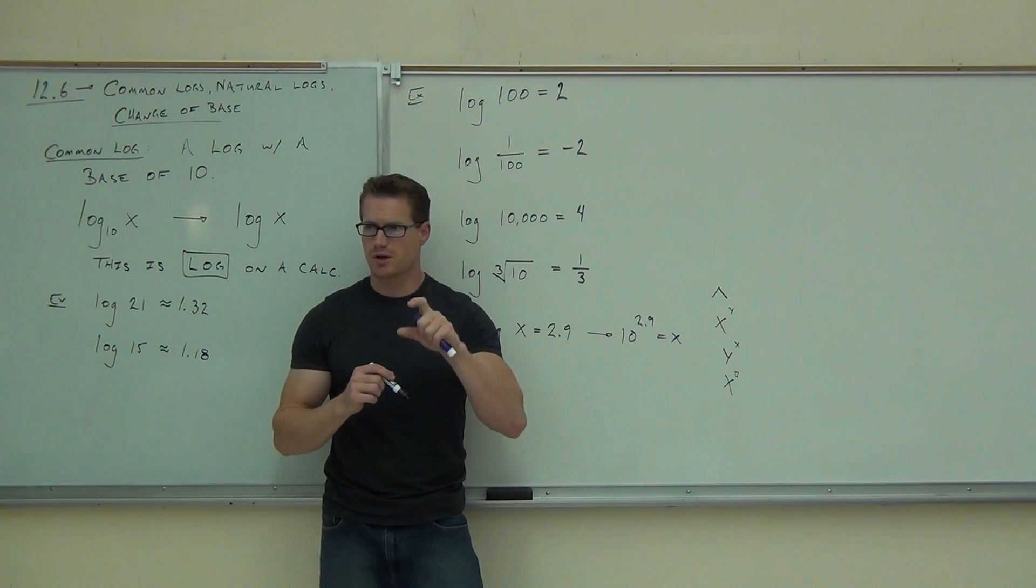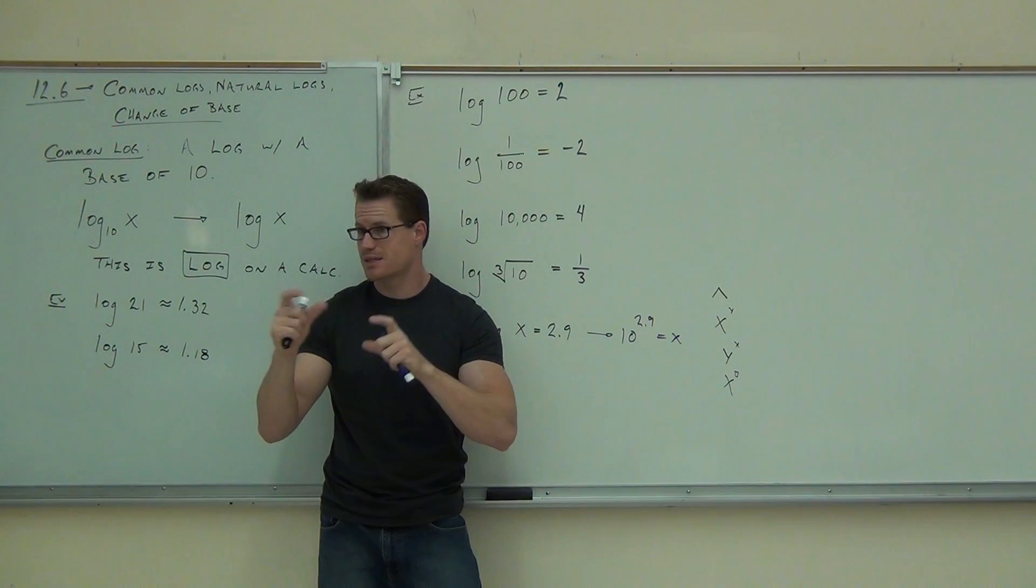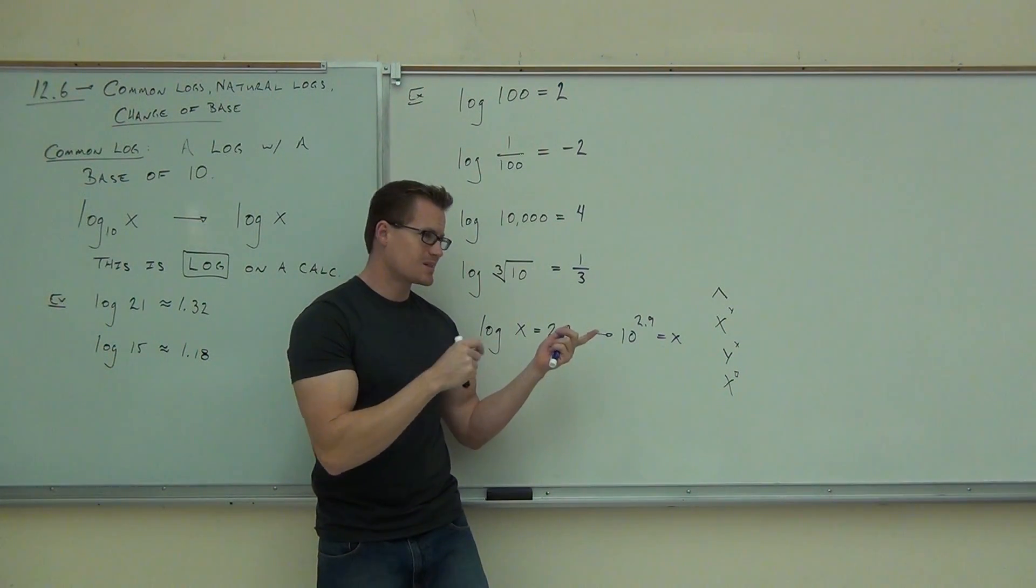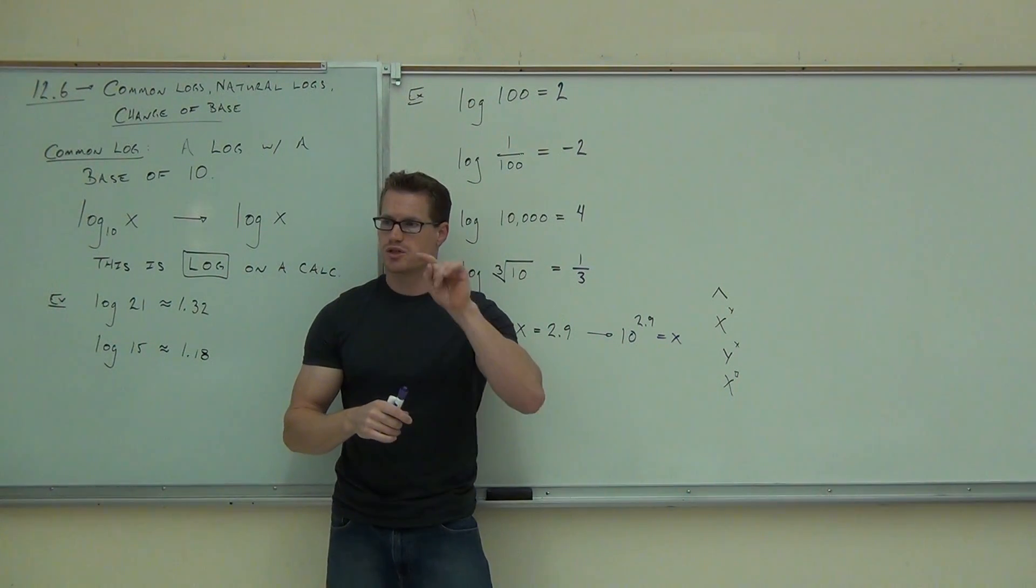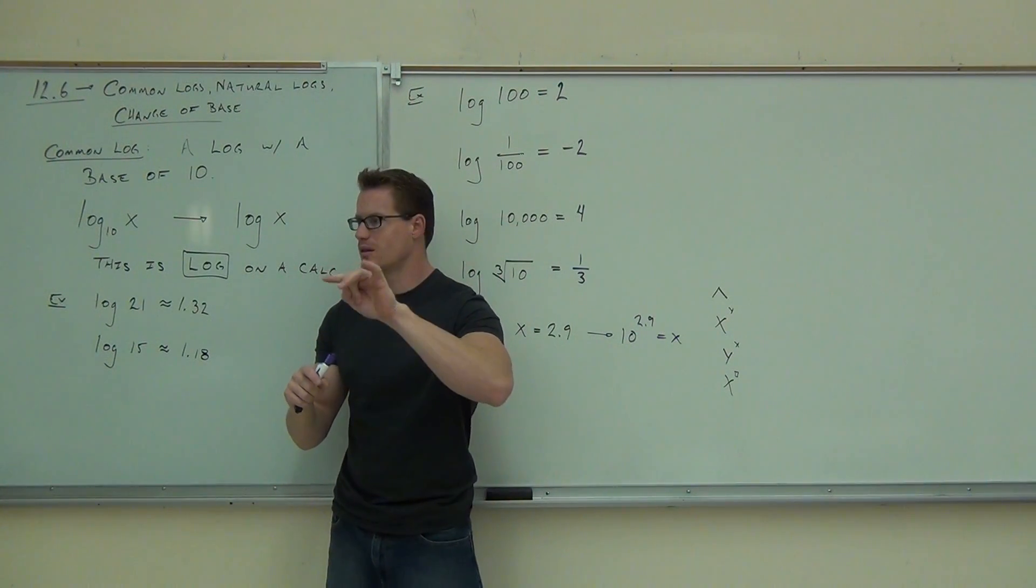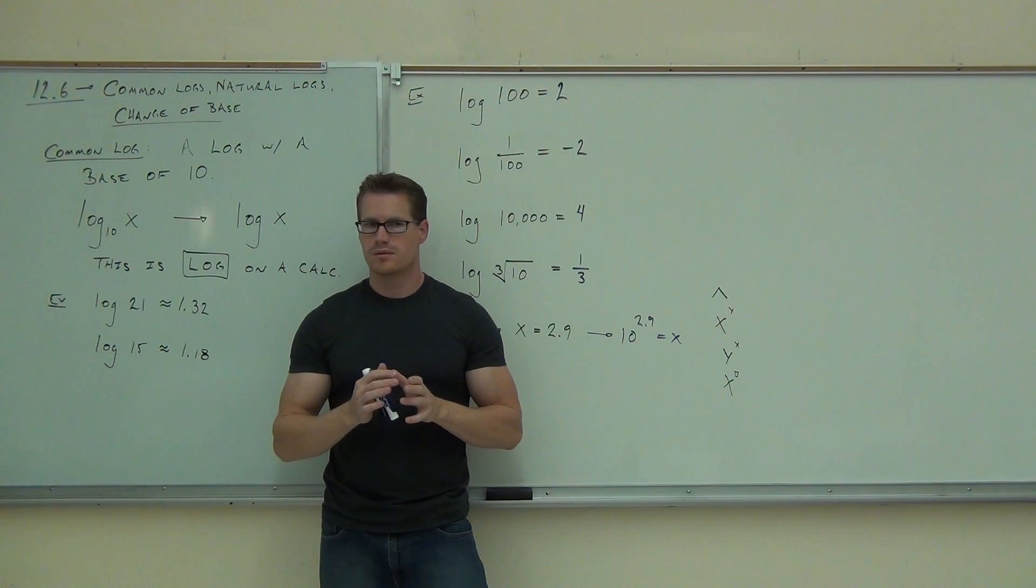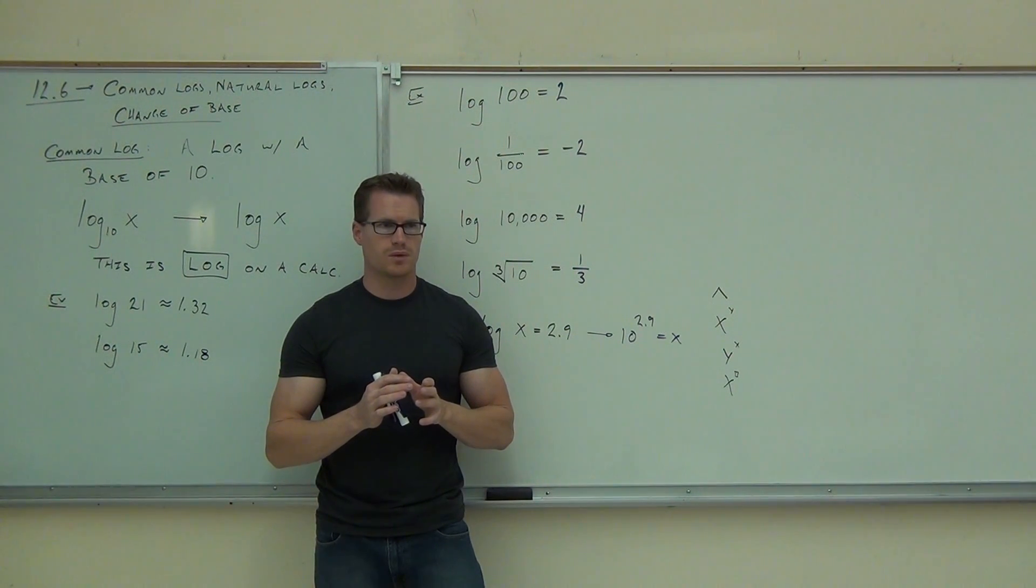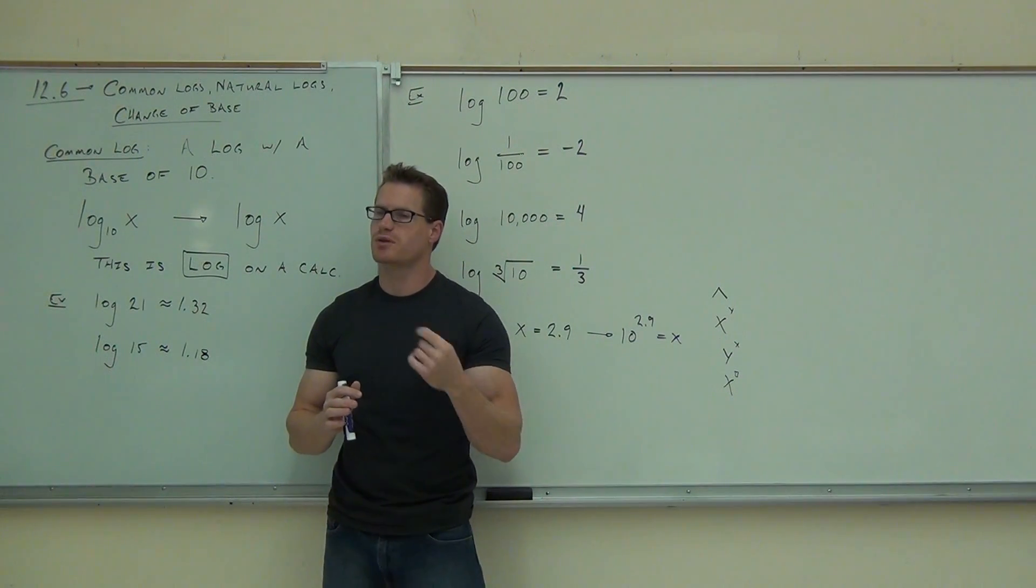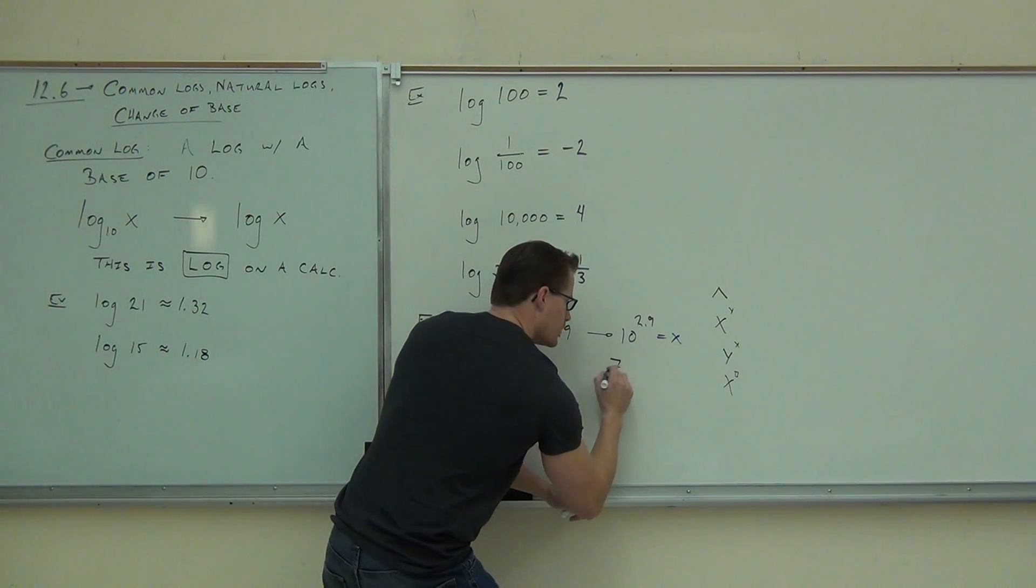There's also another option for you. I want you to look above the log button on your calculator. Look above the log button. Do you see the 10 to the X? Those things are tied together. Why is 10 to the X and log go together? Well, because those are inverse operations. One's the exponential and one's the logarithm. Base 10, base 10. That's why they're tied together. So if you wanted to do this a slightly easier way, you could plug in 2.9, press the shift button or the second button, then press log. Or you might have to do that the other way. Press second, then log, then 2.9. But it should give you exactly the same number.